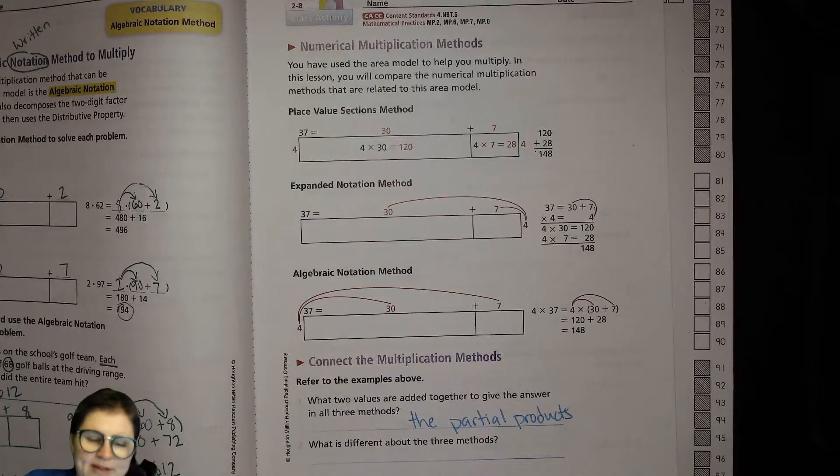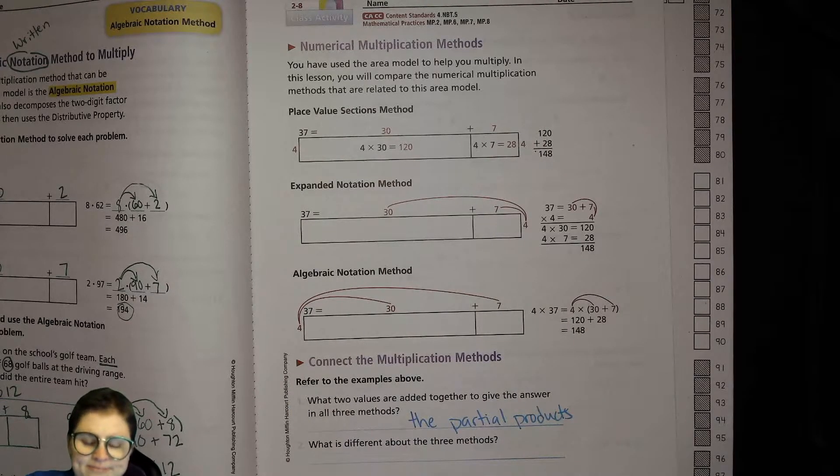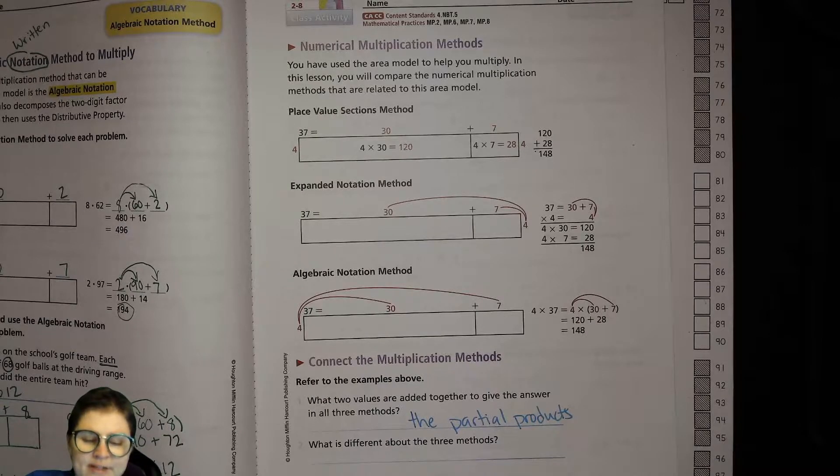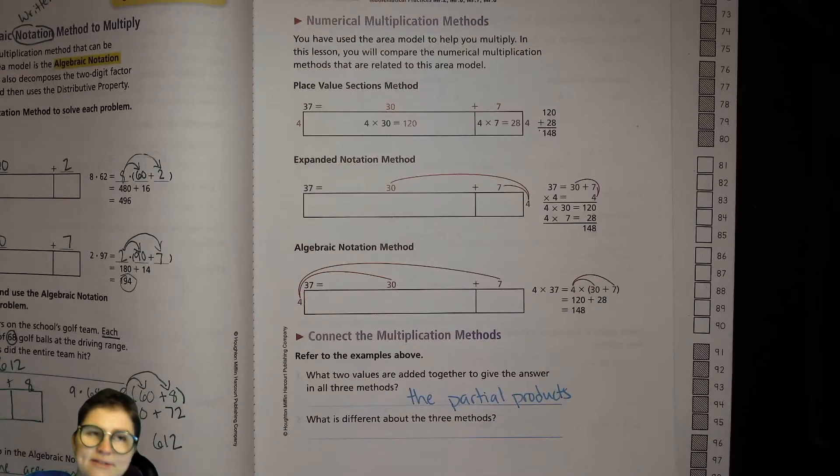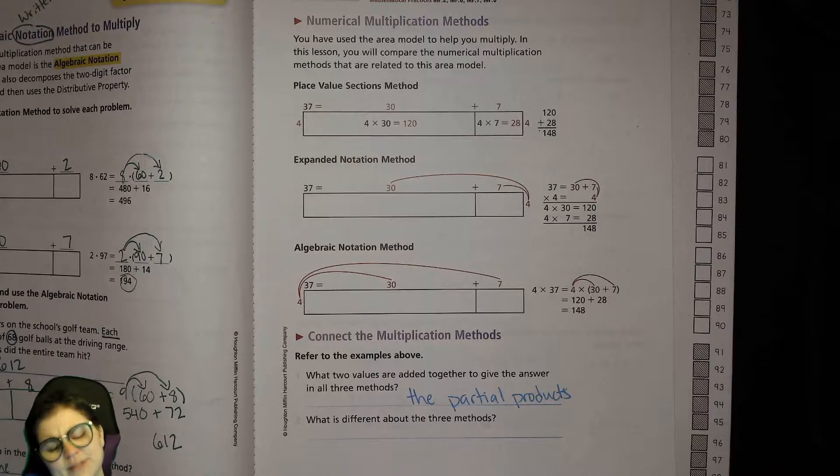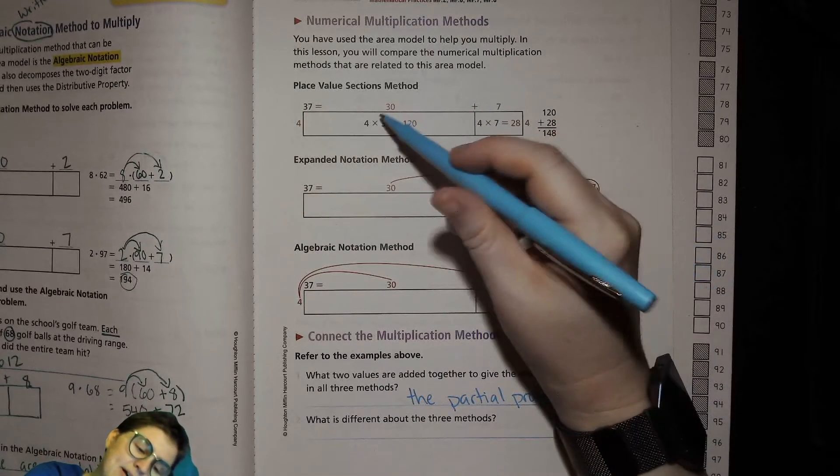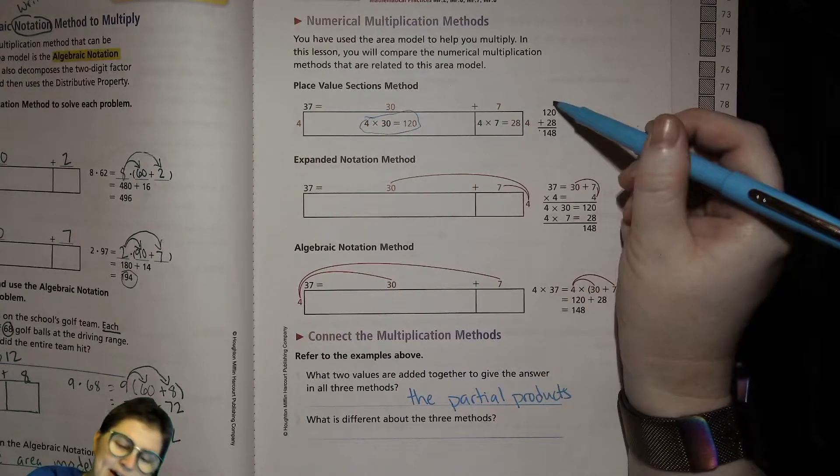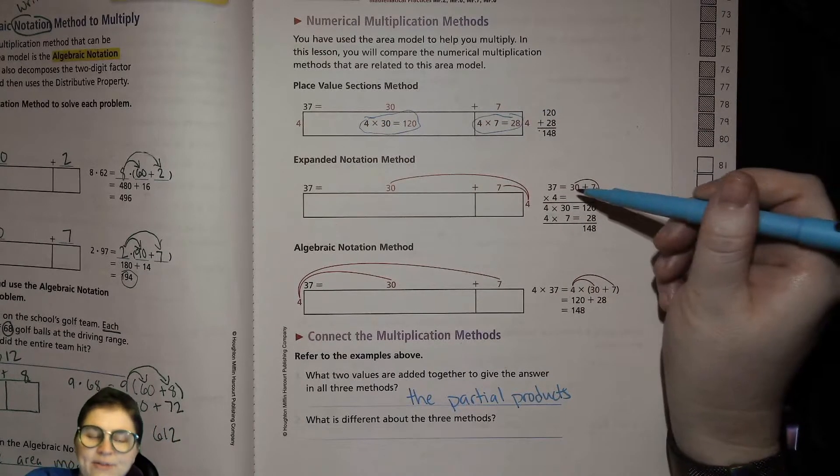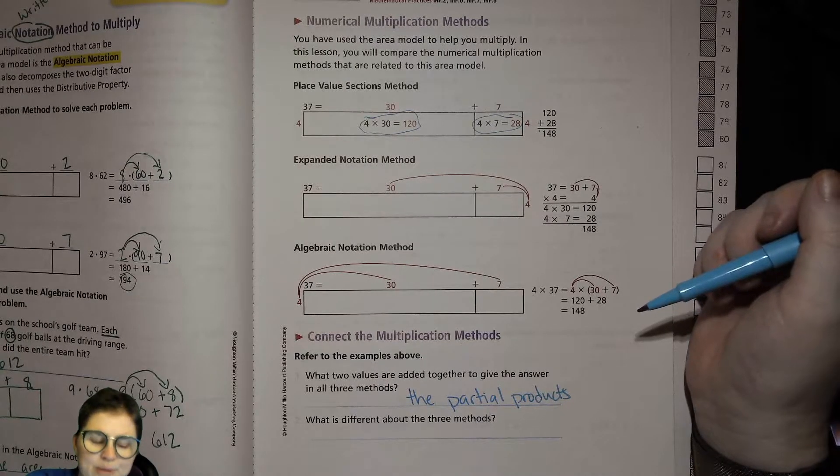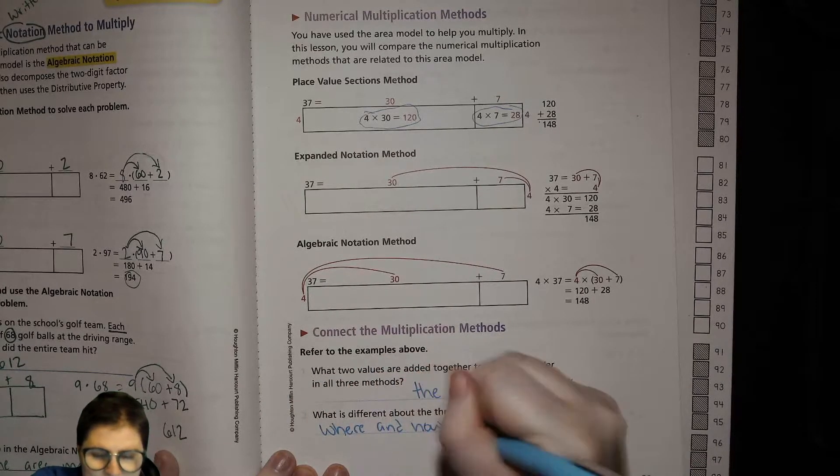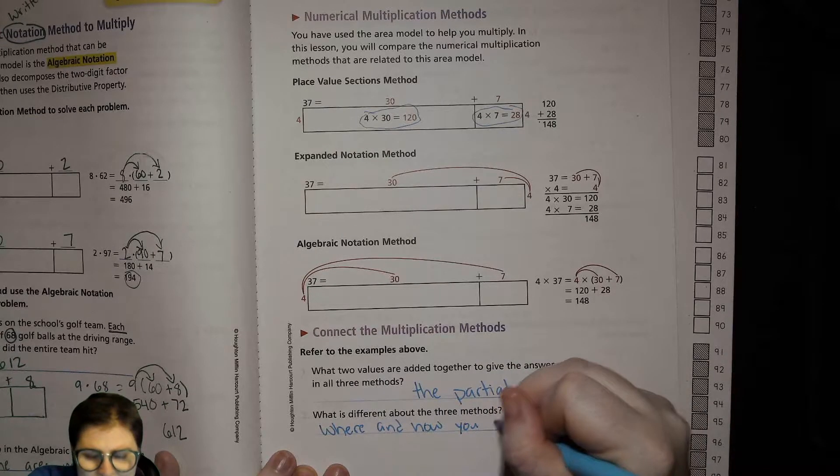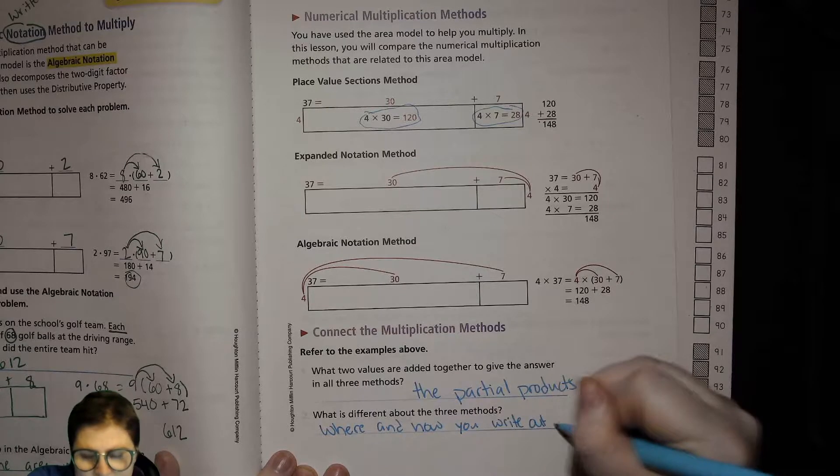Now what is different about these three methods? What is the big difference here? When you're ready to hear me hit play but hit pause if you want to think about it more. I think the big difference is just where and how you write out the equation to find the partial products. Everything else is the same pretty much. So where and how you write out equations.